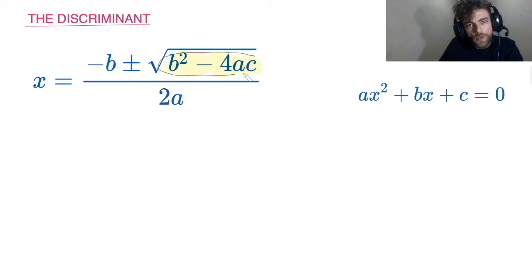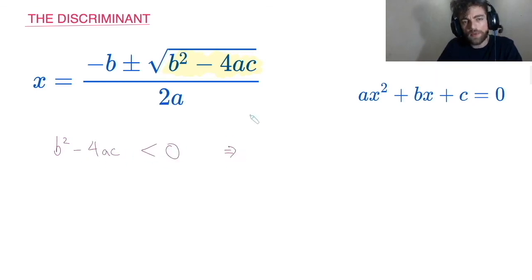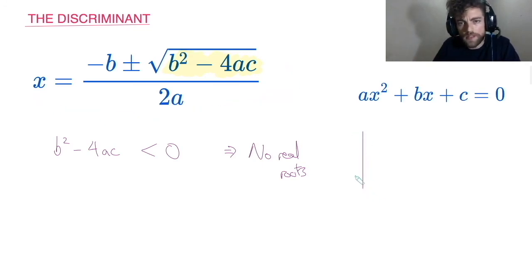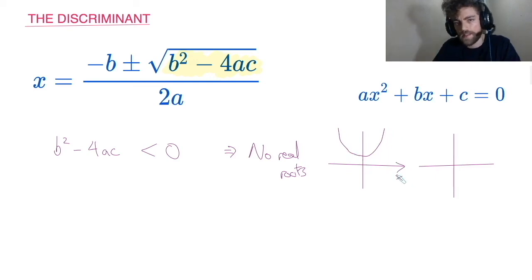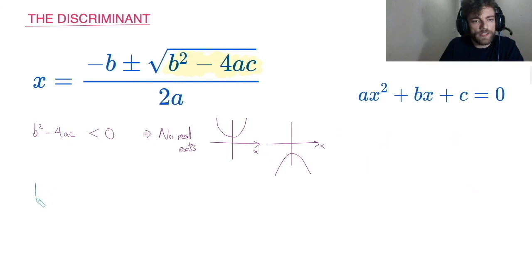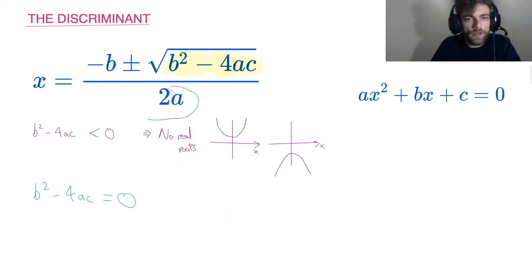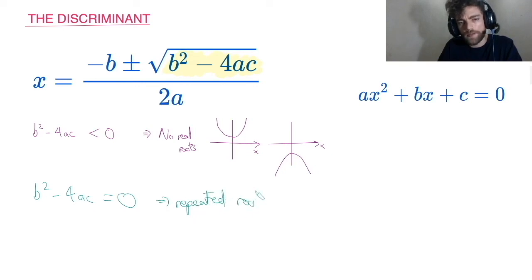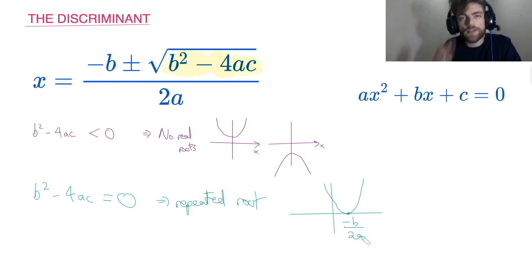We know we can't square root a negative number and get real answers. So if B squared minus 4AC is less than zero, there are no real roots — graphically the parabola doesn't intersect the x-axis at all, whether it's a positive or negative x squared graph. When B squared minus 4AC equals zero, there's no problem square-rooting zero — it's just zero — so we get one real root: x equals minus B over 2A. This is called a repeated root or single real root, and graphically the parabola just touches the x-axis.